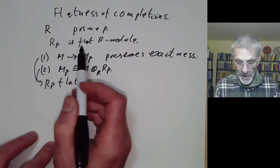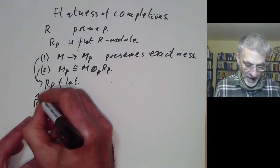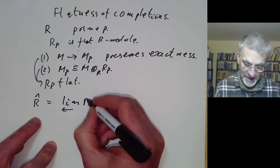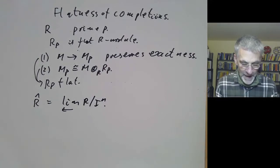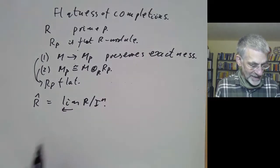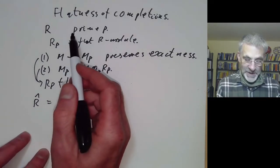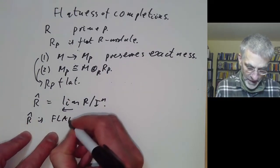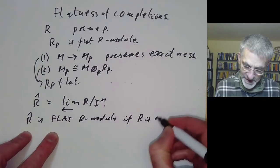We can not only localise at an ideal, we can also take the completion of R at an ideal. The completion is the inverse limit of R over I^n, where I is some ideal. Completion is in some ways a stronger version of localisation. What we want to do in this lecture is to show that R̂ is a flat R-module if R is Noetherian.